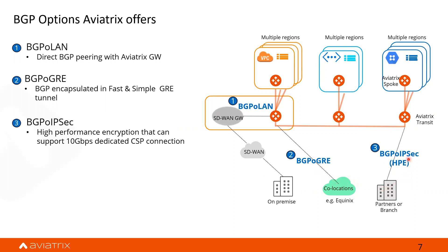We also have BGP over IPSec for those who want to ensure all their traffic is secure and encrypted — so nobody can intercept and eavesdrop on traffic as soon as it leaves the premise all the way to the VPC. This is high-performance IPSec that allows you to use the full bandwidth of your direct connect or dedicated connection.